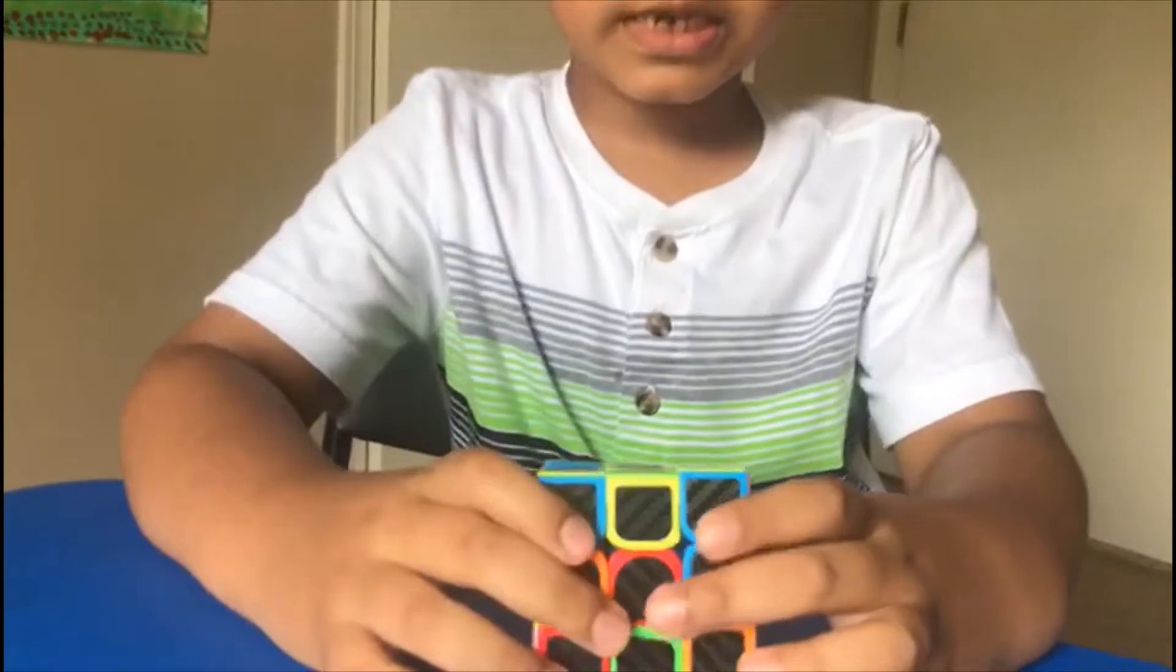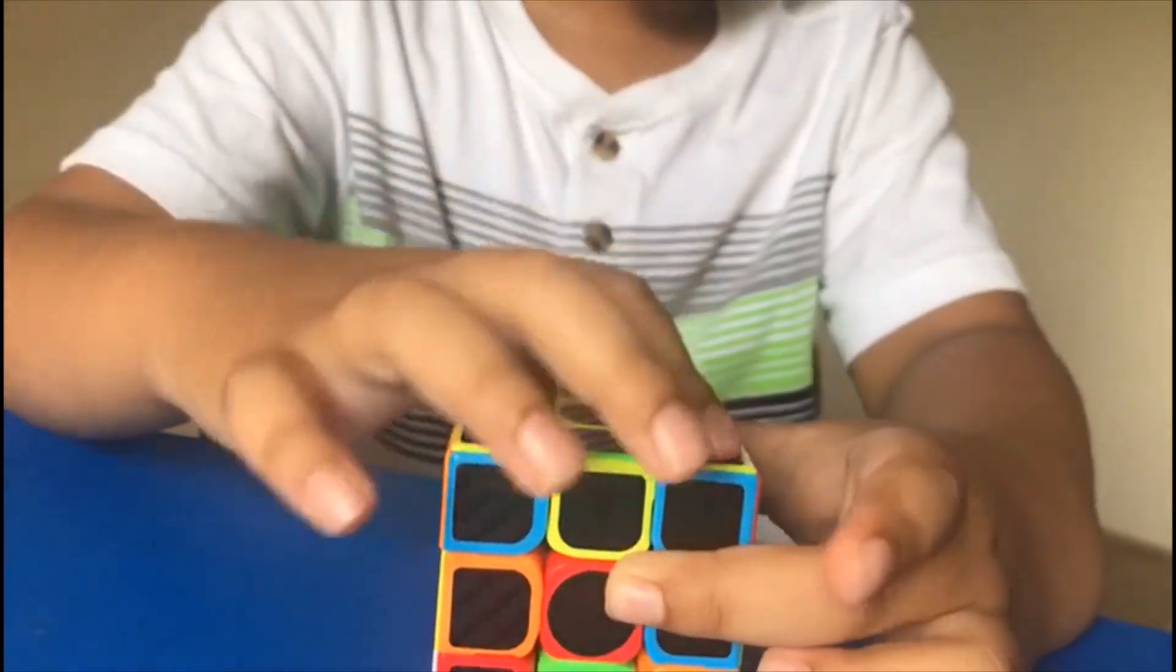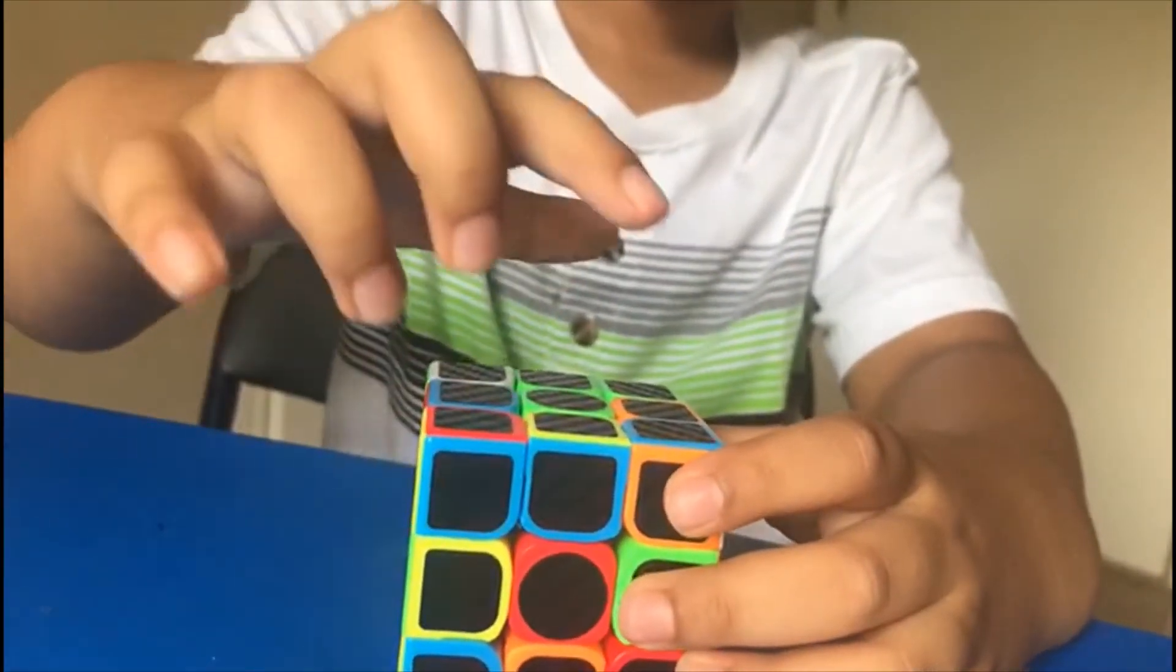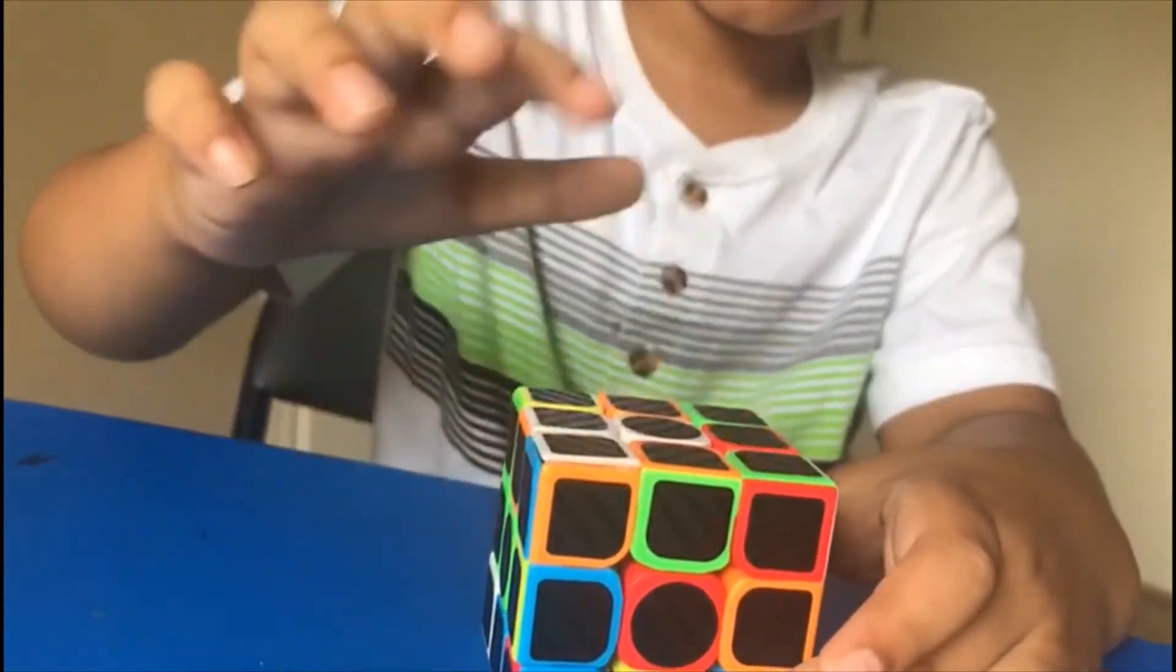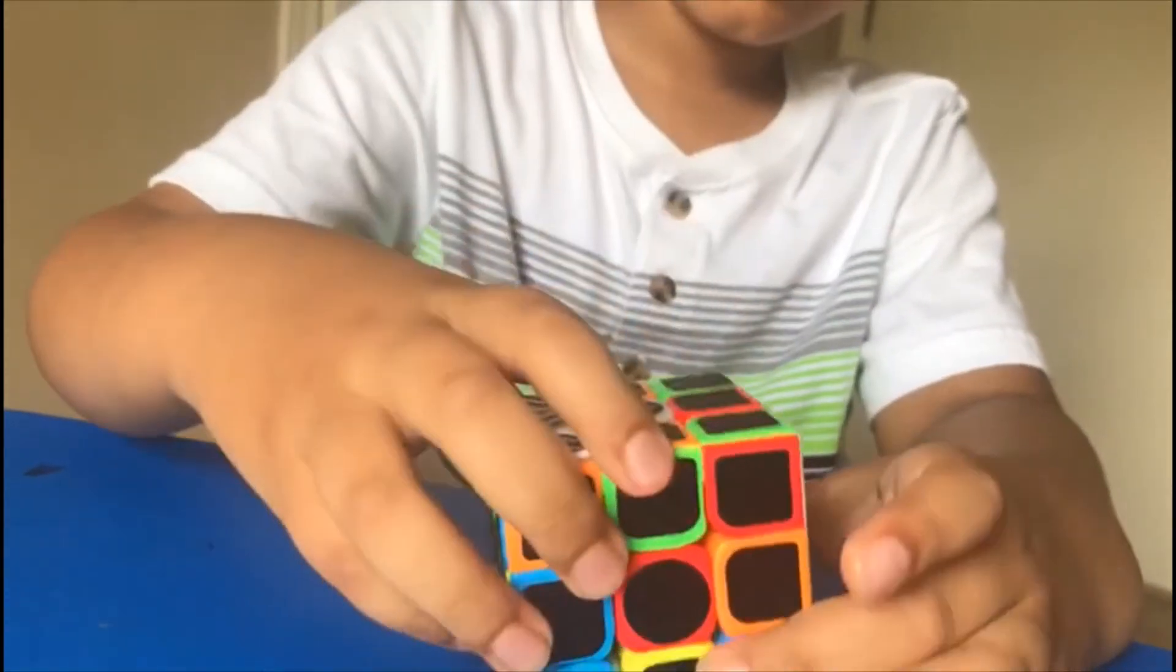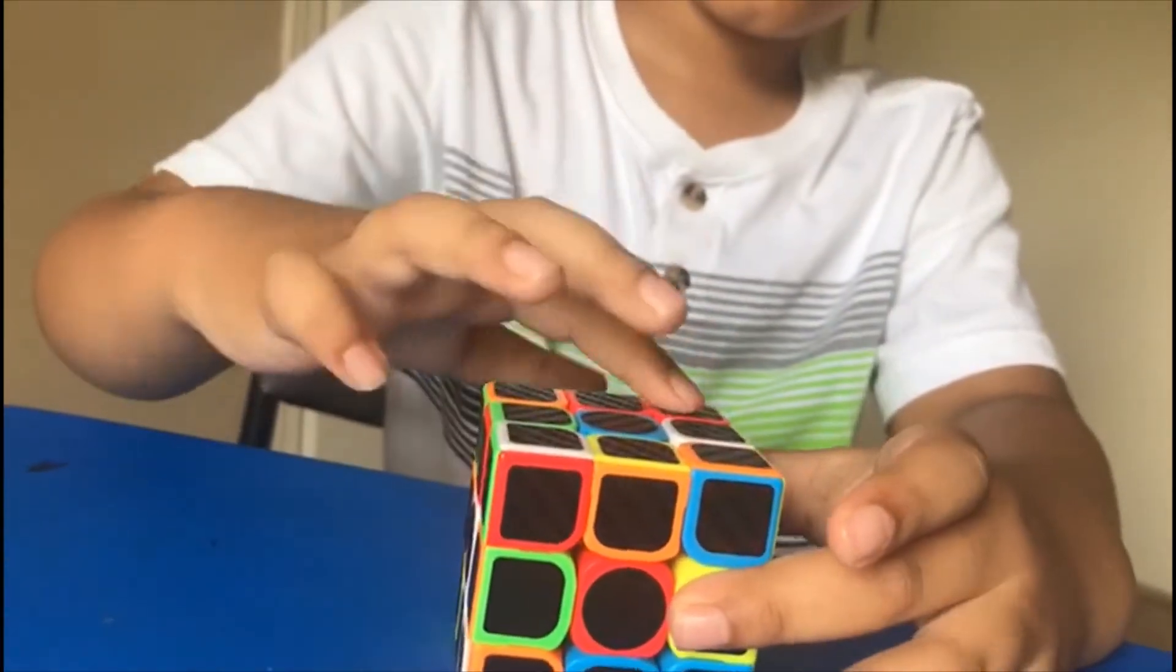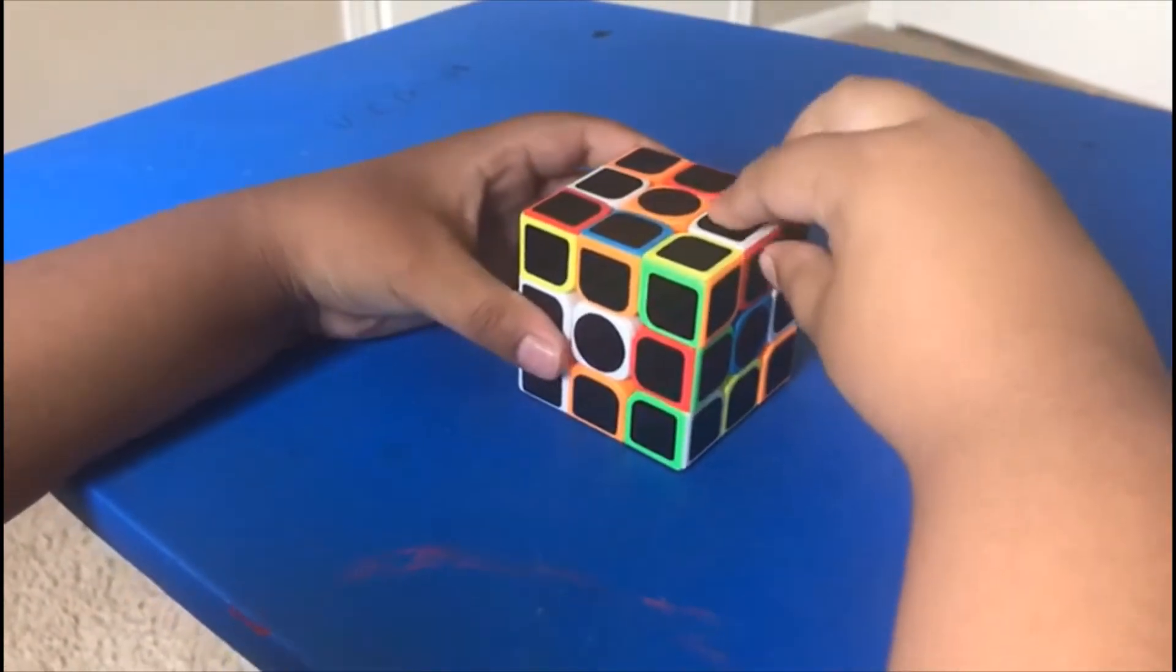In the Rubik's Cube, these are corners. In the Rubik's Cube, these are edges' pieces.